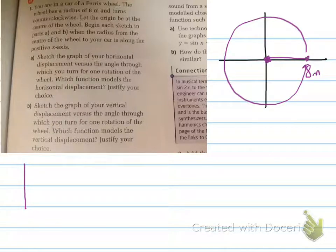Begin each sketch in parts A and B when the radius from the center of the wheel to your car, and a car is the little cabin that you're in when you ride a Ferris wheel. So begin each sketch when the radius from the center of the wheel to your car is along the positive x-axis.